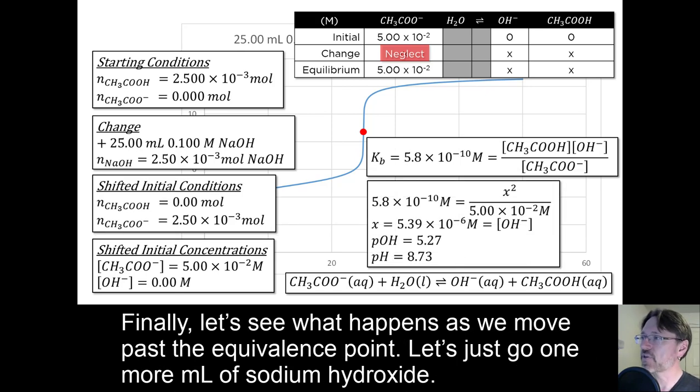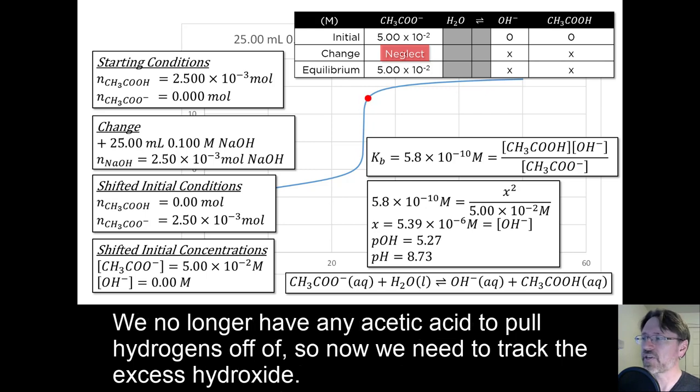Finally, let's see what happens as we move past the equivalence point. Let's just go one more milliliter of sodium hydroxide. We no longer have any acetic acid to pull hydrogens off of, so now we need to track the excess hydroxide.